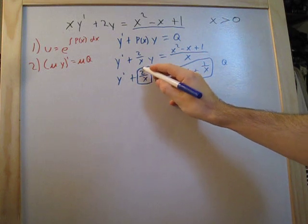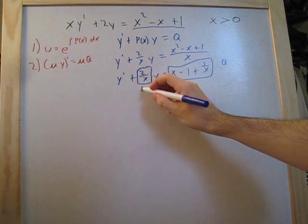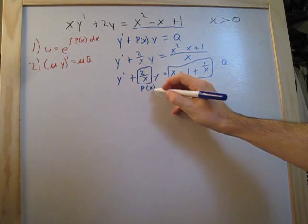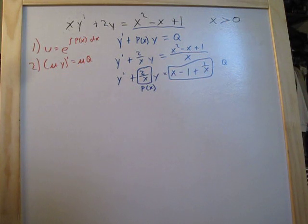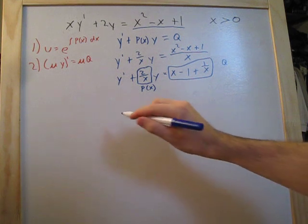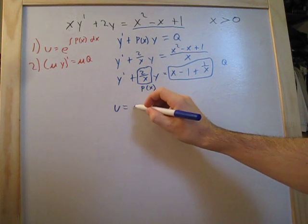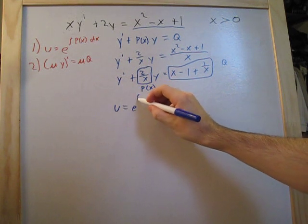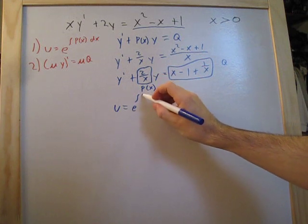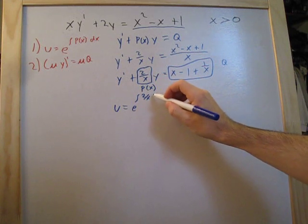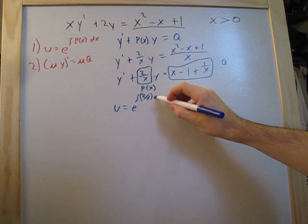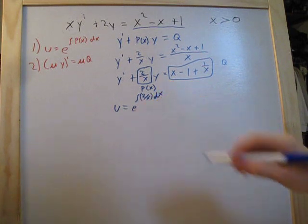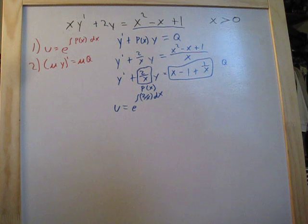The 2 over x is going to equal p(x), and this is where formula number one comes in. We can't use p(x) directly — we need to find u. So u is equal to e to the integral of p(x), which is 2 over x, dx.